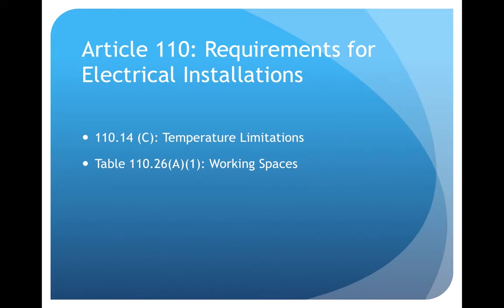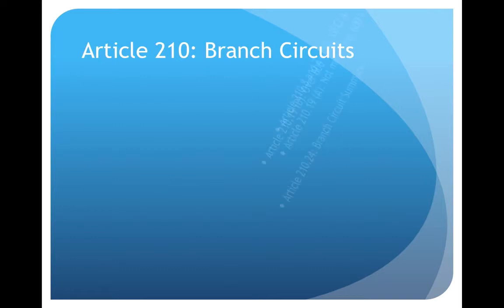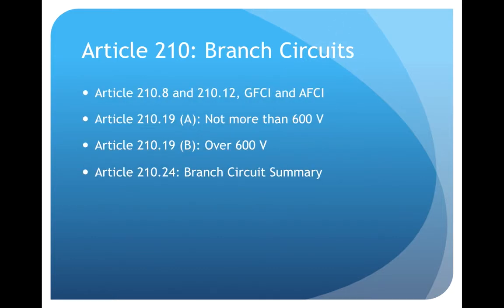Article 110: Requirements for Electrical Installations. If anything, have a tab on 110.14(C) Temperature Limitations and Table 110.26(A)(1) Working Spaces. I'm not saying only study these sections, but if you didn't have a tab on these, have a tab on them. There's just too much information on every single article, and it can be overwhelming. At the very least know these two — if you want to add more, add more.